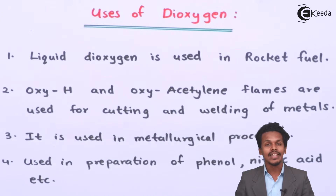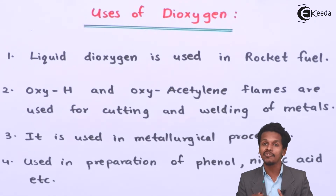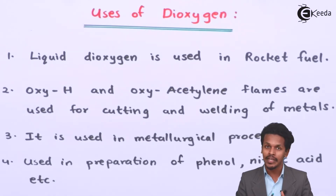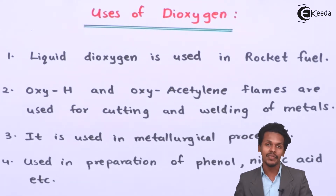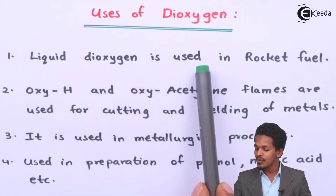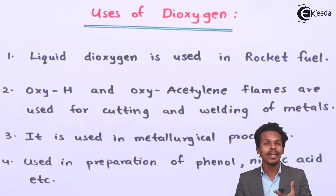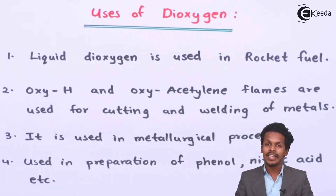These are the biological uses of oxygen. But rather than that, what are the other uses of oxygen? The first one is that liquid dioxygen is used in rocket fuels because it gives too much heat energy so that even the rocket could be able to fly off.